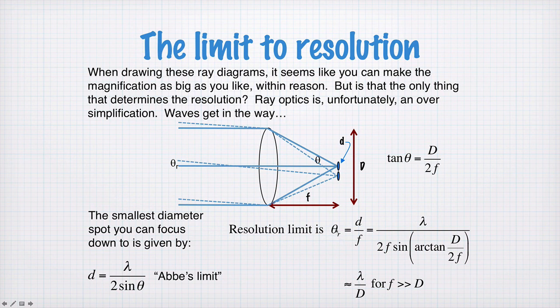...is approximately equal to lambda divided by D, the diameter of the lens. So we see that smaller wavelengths are good, and larger diameter lenses are good for improving resolution.